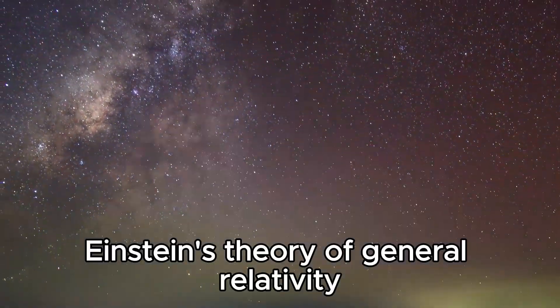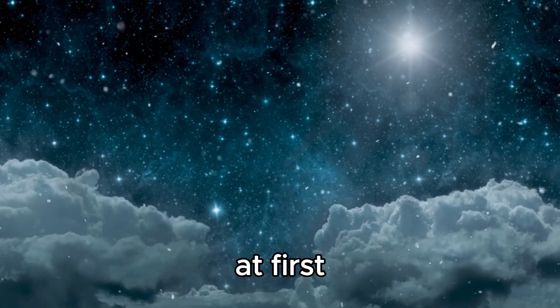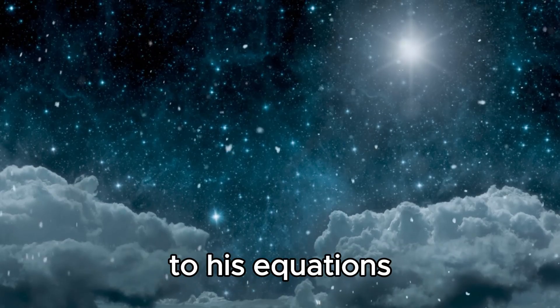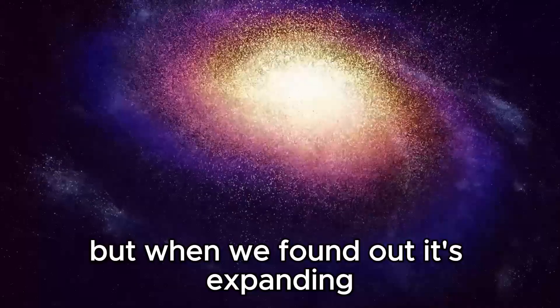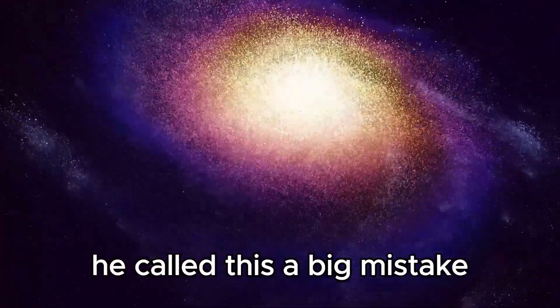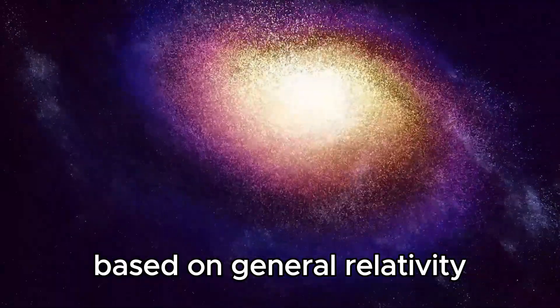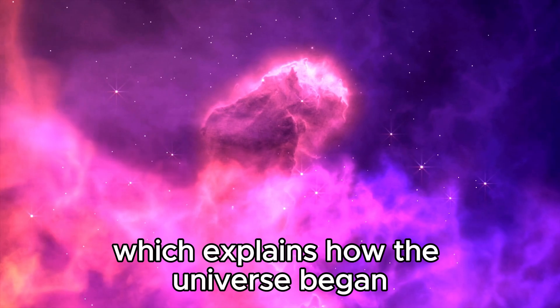Einstein's theory of general relativity has big implications for how the universe is structured. At first, he added something called a cosmological constant to his equations because he thought the universe was not changing. But when we found out it's expanding, he called this a big mistake. This idea of an expanding universe based on general relativity is a key part of the Big Bang theory, which explains how the universe began.